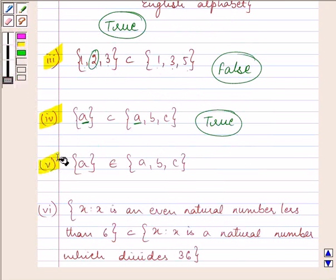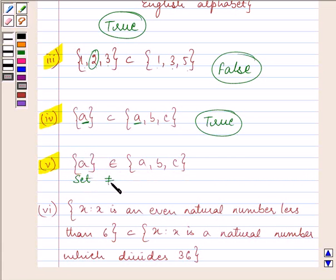Proceeding on to the fifth part. It says {a} belongs to {a, b, c}. Now this will be a false statement. And do you know why it will be a false statement? It will be a false statement because an element can only belong to a set. A set cannot belong to a set.